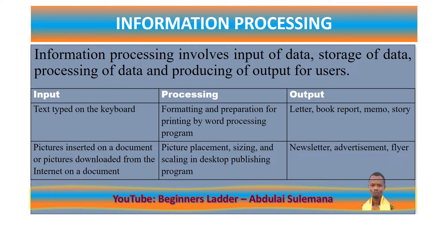Data. Let's say data is something that is in its raw state — something that you haven't worked on, something that is not manipulated. It's just raw. So we can say raw materials are data. For instance, if you go to a forest and cut down trees, we can say that is data.